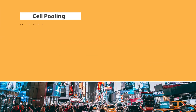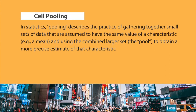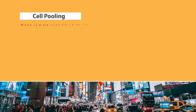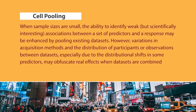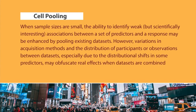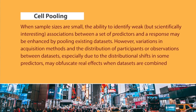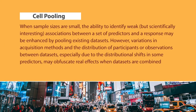Regarding cell pooling: in statistics, pooling describes the practice of gathering together small sets of data assumed to have the same value of a characteristic — such as a mean — and using the combined larger set to obtain a more precise estimate. When sample sizes are small, the ability to identify weak but scientifically interesting associations between predictors and the response may be enhanced by pooling existing data sets. However, variations in acquisition methods and distributional shifts in predictors between data sets may obscure real effects when data sets are combined.